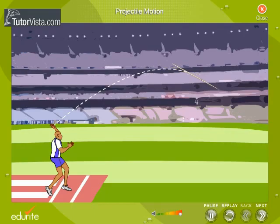Objects like javelin which move along a path determined by gravity and air resistance are called projectiles. The path followed by a projectile is called trajectory.